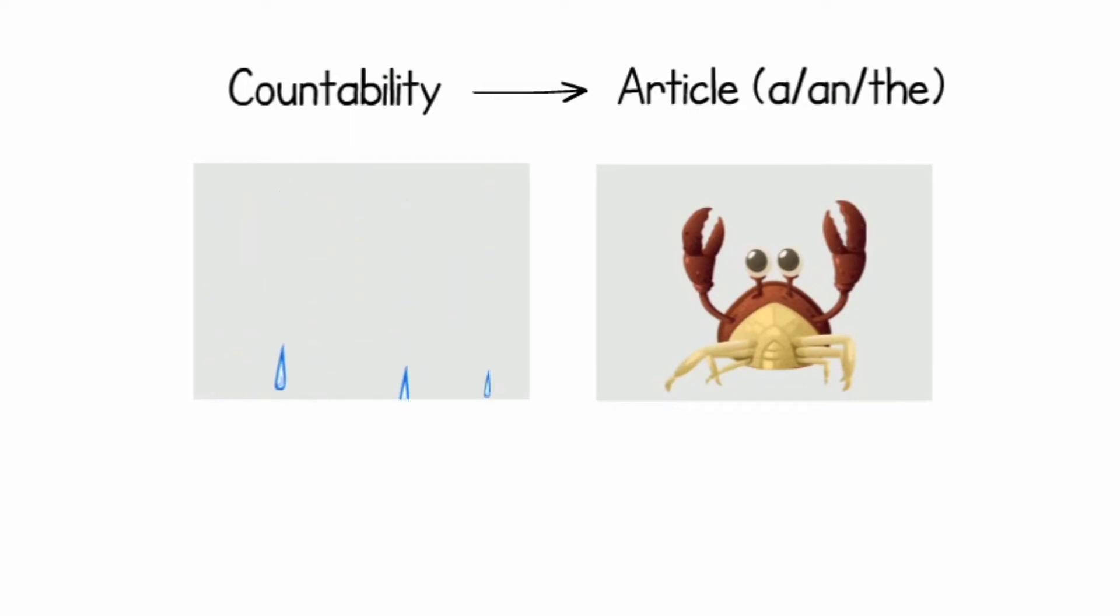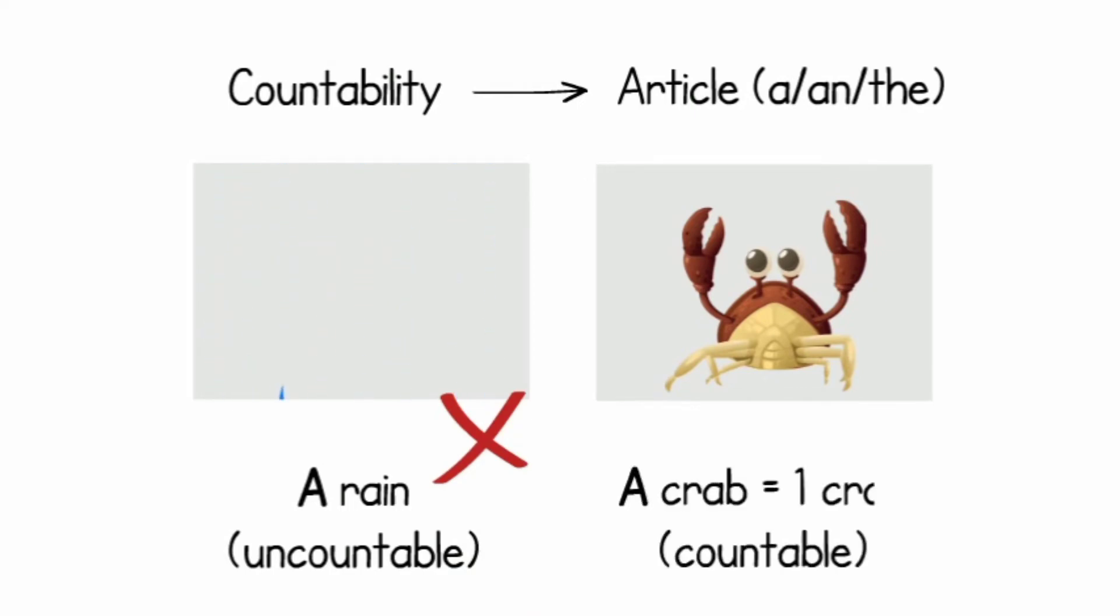Countability is also important for determining which article, a, an, or the, can be used with a noun. For example, you generally would not use the articles a or an with an uncountable noun. Review the section on articles for more information about article usage and countability.